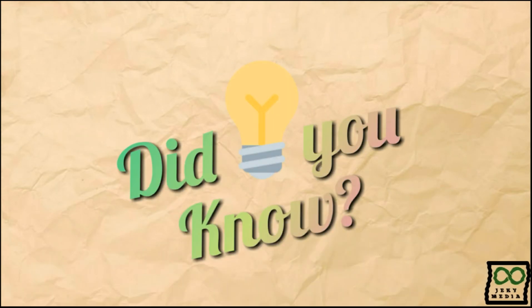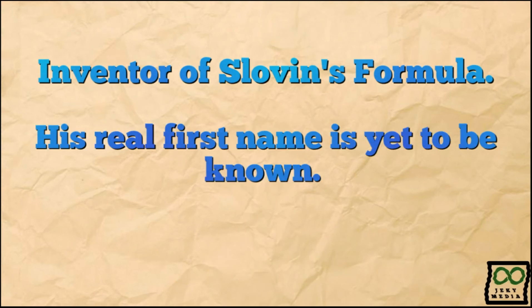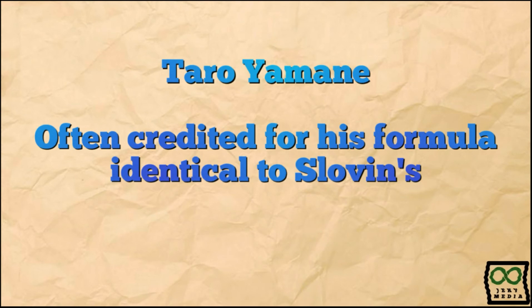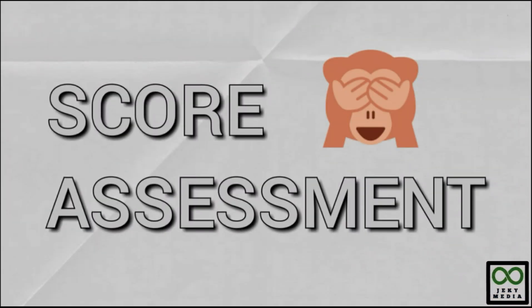Here is another set of facts all about the main topic. Check this out. Did you know who the inventor of Slovin's formula is? Well, his photo is still unavailable. His real first name is yet to be known. All we know is he invented the formula in the 1960s. Do you know Taro Yamane? He is often credited for his formula which is identical to Slovin's, but his formula was published years after Slovin's.